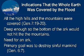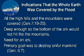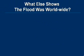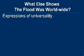Genesis 7:19-20 says, 'The waters prevailed exceedingly upon the earth, and all the high hills under the whole heaven were covered — 15 cubits upward did the waters prevail, and the mountains were covered.' What else does the Bible show? There are at least 30 expressions of universality. Like it says: all flesh died, all the mountains were covered, all in whose nostrils was the breath of life. 'All, all, all' — of all that was in dry land died. Over and over again, he's emphasizing not just some, but all.